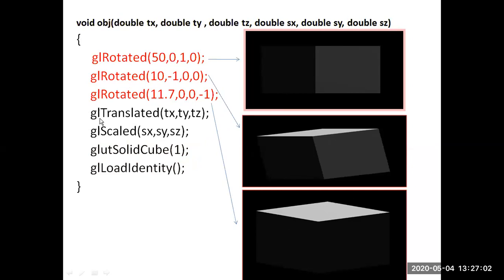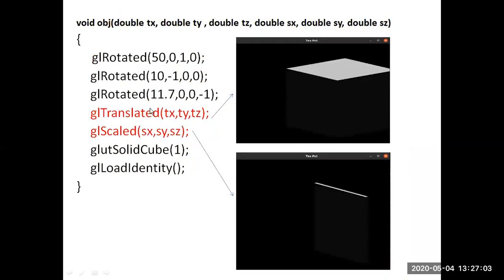Then when gl_translate is performed, the cube is translated at some distance TX, TY, TZ. When gl_scale is called, the cube is scaled down, and you can observe it now looks like one wall of the scene.